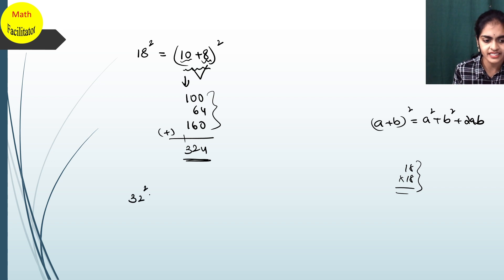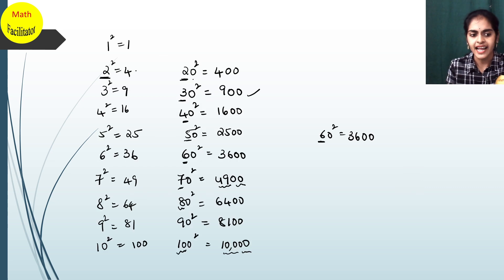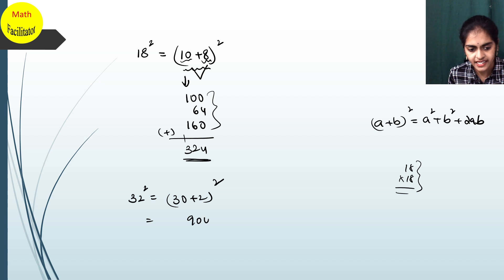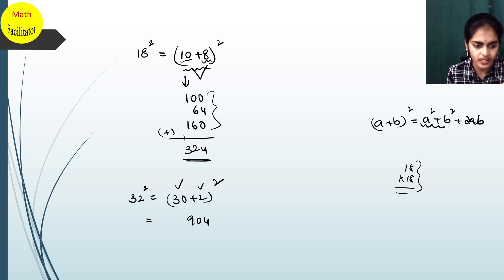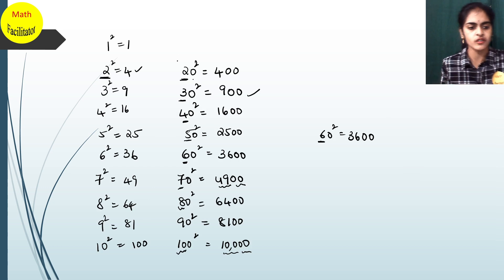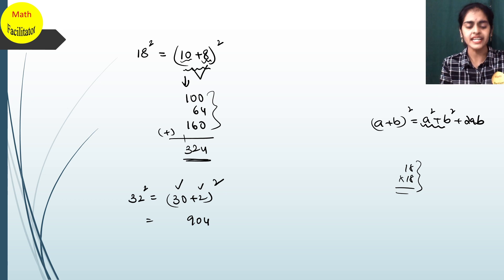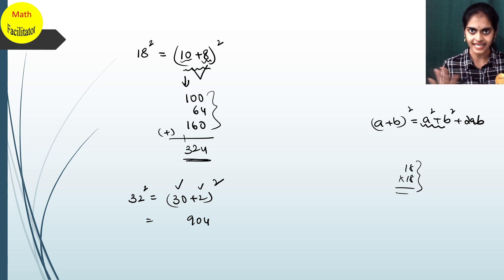Let's take one more example. If I want to find 32², I'll simply write it as (30 + 2)² — a multiple of 10 and a single digit. So 30² = 900 and 2² = 4, so 900 + 4 = 904. You are squaring both numbers: 30² = 900 is easy because you take the single digit square and write two zeros, and 2² = 4.